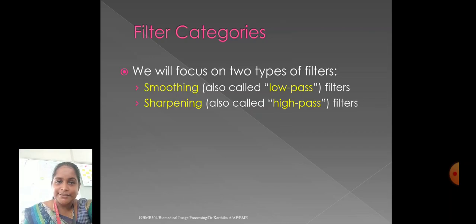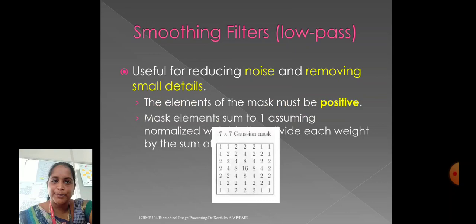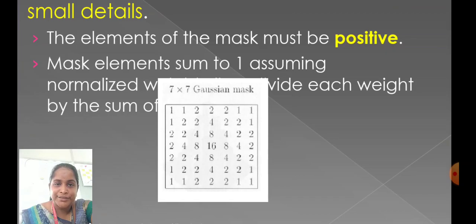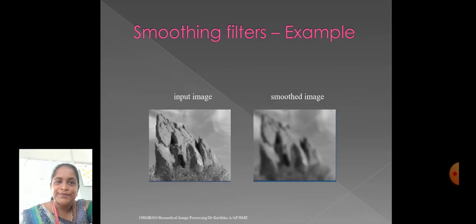In filter categories, smoothing, it is also called the low-pass filters. We already discussed the sharpening, it is also called the high-pass filters. In smoothing filters, low-pass, it is useful for reducing noise and removing small details. The elements of the mask, it must be positive. The mask element summed to one. Here, it shows the 7x7 Gaussian mask. Here, we have an input image, and we have a smooth image. The image is fully smooth.